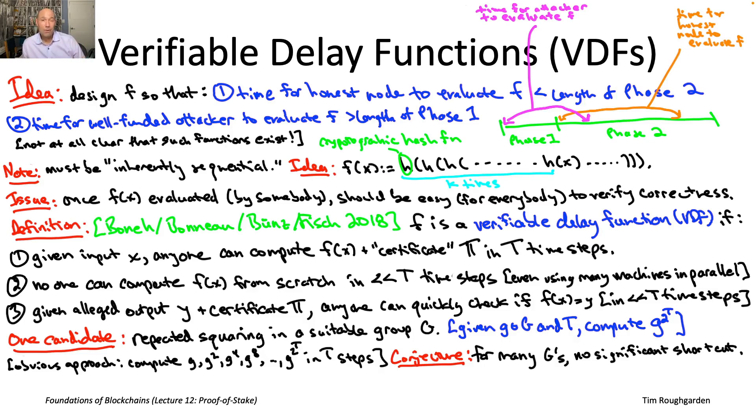Just like we don't know, for a fact, that there's no efficient algorithm for, say, factoring or computing discrete logarithms. It's just a conjecture. It just says that as long as this is true, as long as you can't have a significant shortcut, then hopefully we'll get a VDF with the desired properties.